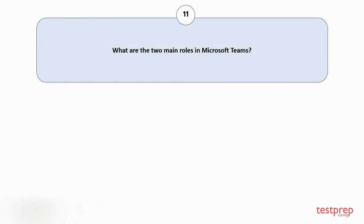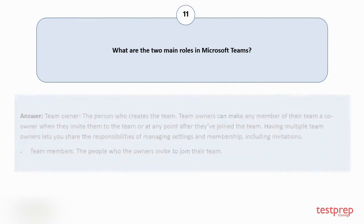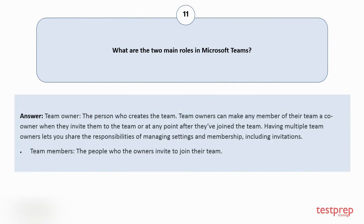Question number 11: What are the two main roles in Microsoft Teams? 1. Team owner — the person who creates the team. Team owners can make any member of their team a co-owner when they invite them to the team, or at any point after they've joined the team. Having multiple team owners lets you share the responsibilities of managing settings and membership, including invitations. 2. Team members — the people who the owners invite to join their team.